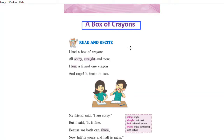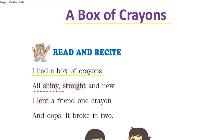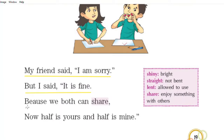So let's start. 'A Box of Crayons.' I had a box of crayons, all shiny straight and new. I lent a friend one crayon, and oops it broke in two. My friend said I am sorry, but I said it is fine, because we both can share — now half is yours and half is mine.